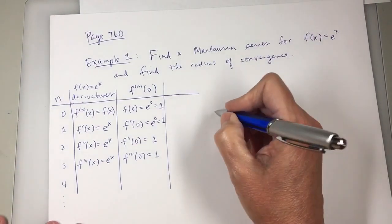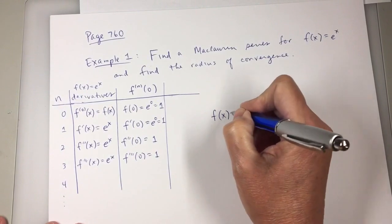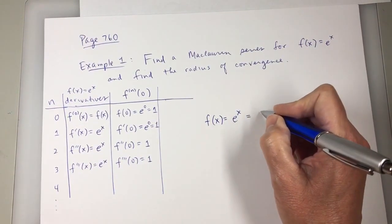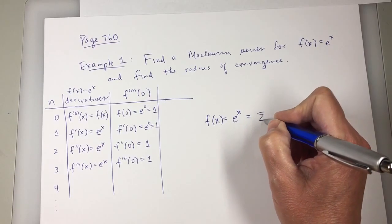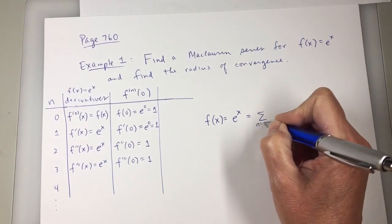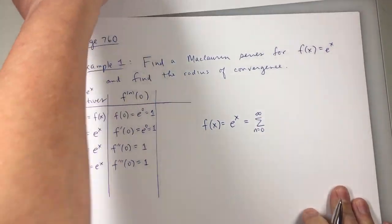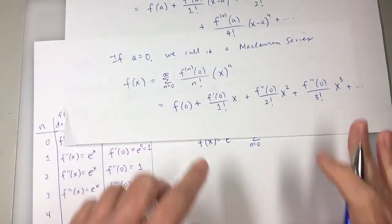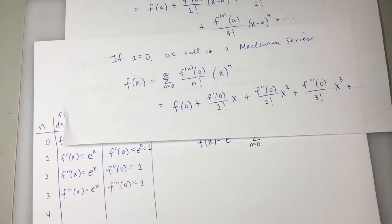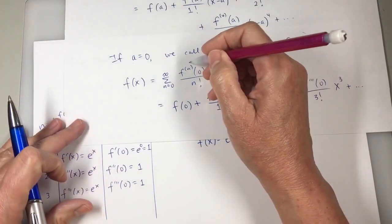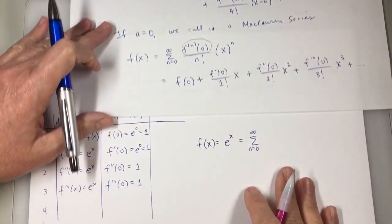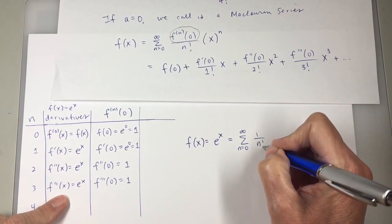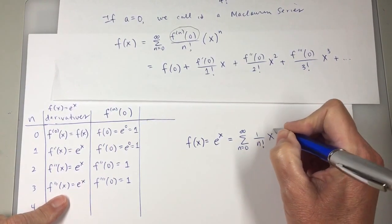So f(x) is e to the x. And my Maclaurin series would be the sum as n starts at zero and goes to infinity. I'm looking right here. This numerator, in this case, this numerator is always what? 1. So it's going to be 1 over n factorial times x to the n.